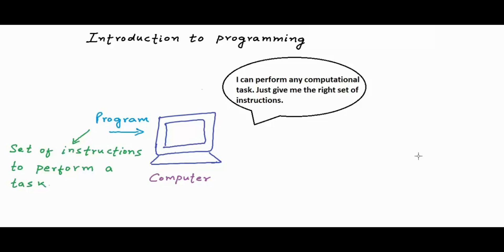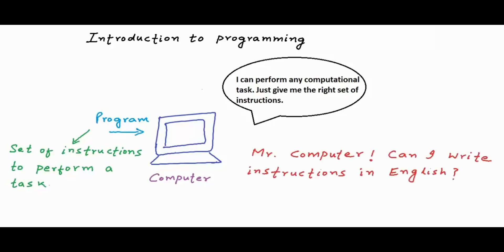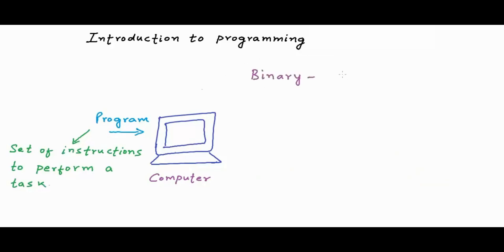A program is a set or sequence of instructions that you would give to the computer, and the computer would execute those instructions. In what language can I give these instructions to the computer? Can I give these instructions in a natural language like English? You must have heard that a computer understands binary — binary is the language of computers. Binary is a number system that has only two digits, 0 and 1. The number system that we use has 10 digits from 0 to 9, and we call it the decimal number system. So why does a computer understand binary, or rather why are computers designed to understand binary?